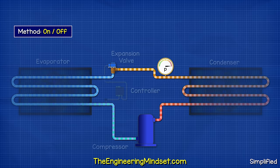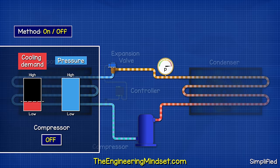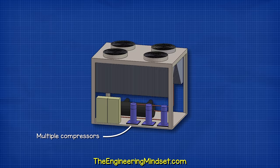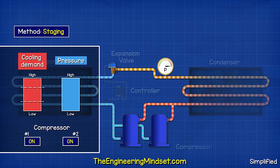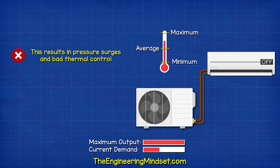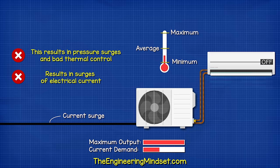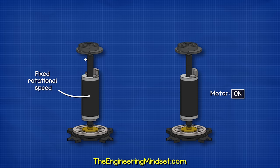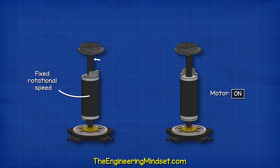Traditionally, scroll compressors would just be turned on and off to control the cooling capacity. The system is either completely on or completely off, there is no in-between. On larger systems with groups of compressors, they would simply be turned on and off at different stages to try and meet the cooling demand. This does give some modulation of capacity but it's not very good. Turning the system on and off causes pressure surges. It also causes bad thermal control and also causes electrical surges.